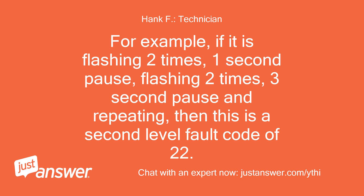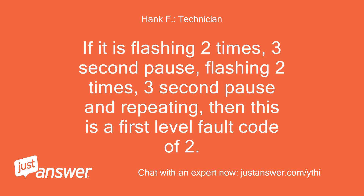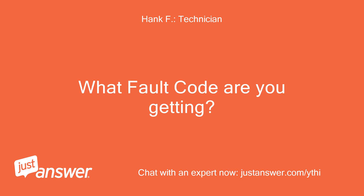For example, if it is flashing 2 times, 1 second pause, flashing 2 times, 3 second pause, and repeating — then this is a second-level fault code of 22. If it is flashing 2 times, 3 second pause, flashing 2 times, 3 second pause, and repeating — then this is a first-level fault code of 2. What fault code are you getting?